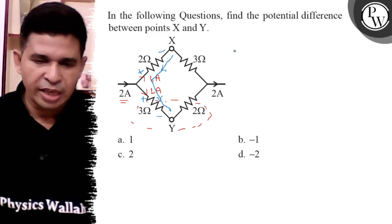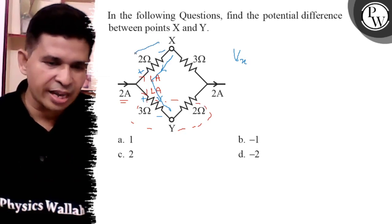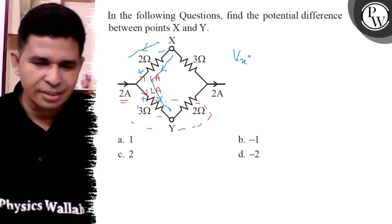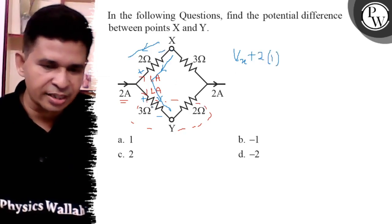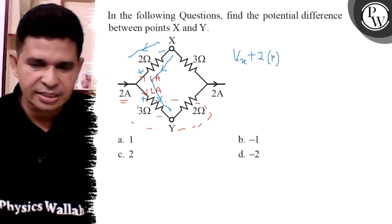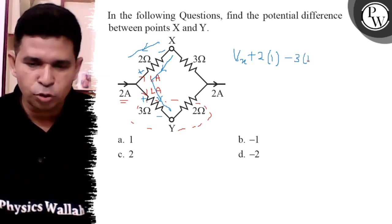So Vx is taken, and we're going from minus to plus, so it is plus, and 2 into 1 ampere is the current. Here we're going from plus to minus, so it's minus 3 into 1, and it is equal to Vy.